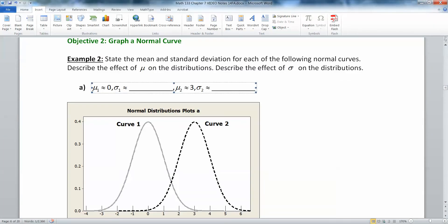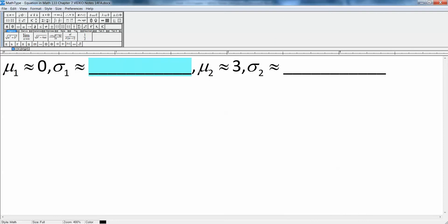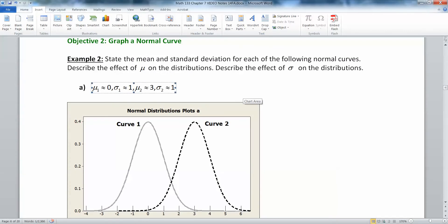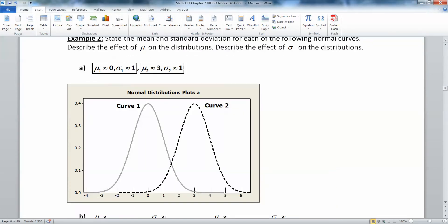Great. Okay. What about standard deviations? Well, the standard deviations is where the inflection point happens, which is about 1 away for both of these. So standard deviation is 1 for curve number 1. It's actually 1 for curve number 2 as well.